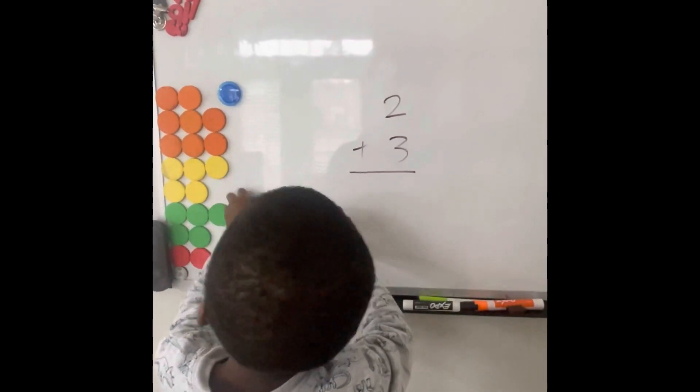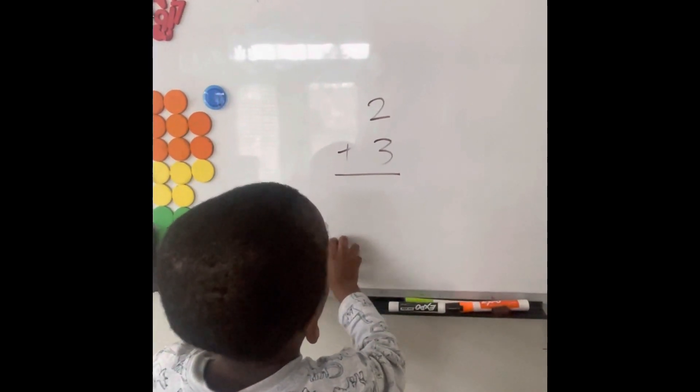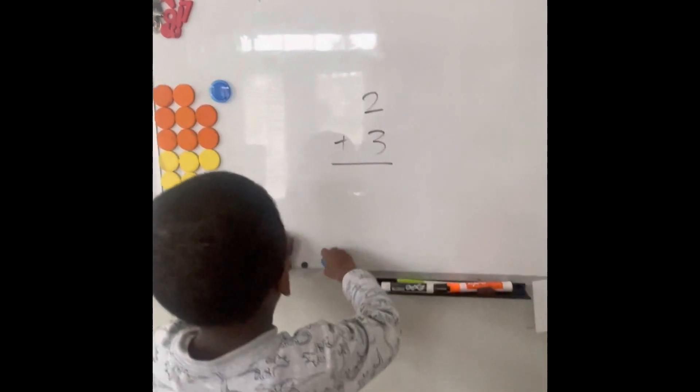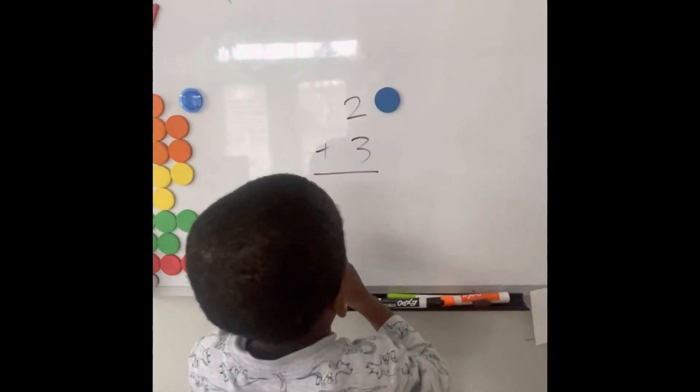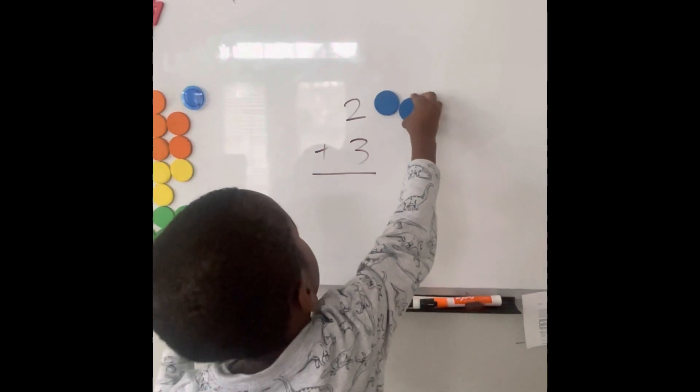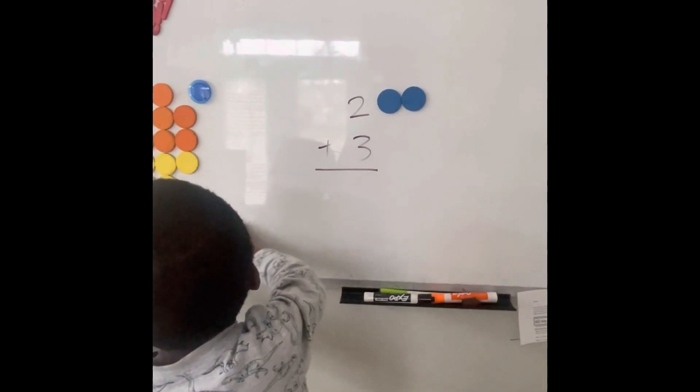All right, go for it. Read the problem first. Two plus three. Okay, now go ahead, do it. While he's doing this, you know this to me is one of the most important pieces. It shows a child conceptually what addition is.